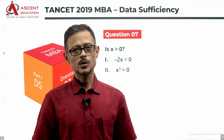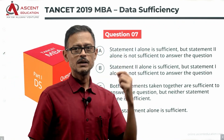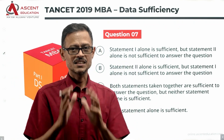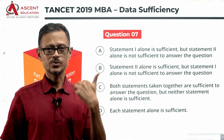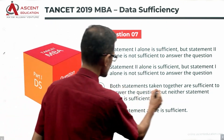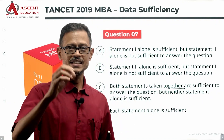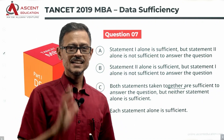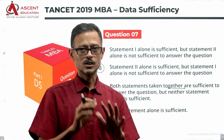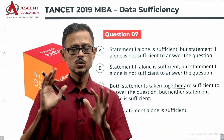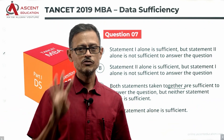Let's look at the four answer options. Answer option A: if statement one alone is sufficient but statement two is not sufficient. Answer option B: if statement two alone is sufficient and statement one is not. Answer option C: if both statements taken together are sufficient but each statement is independently not sufficient. Answer option D: if each statement alone is sufficient.